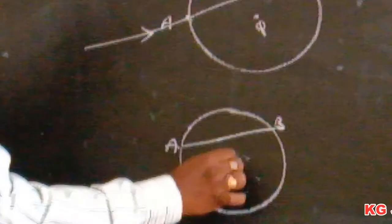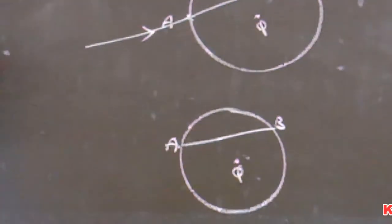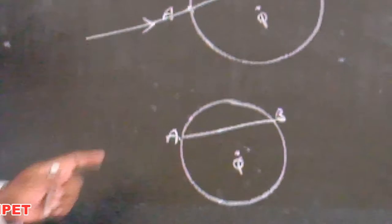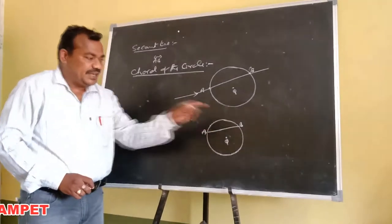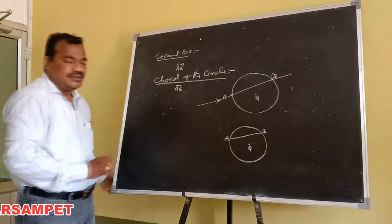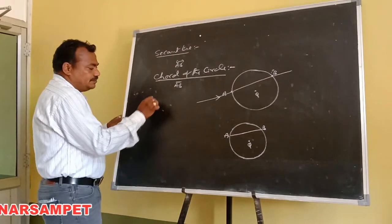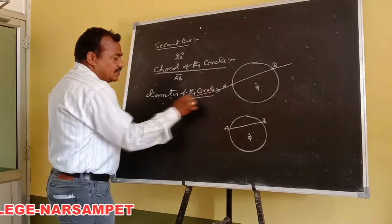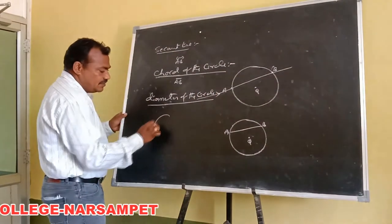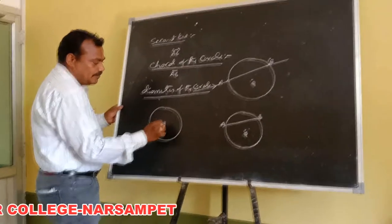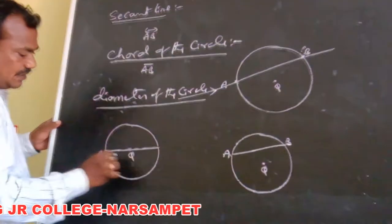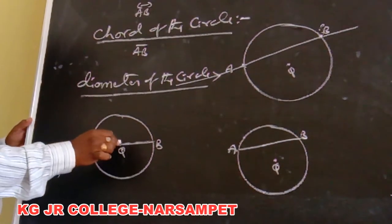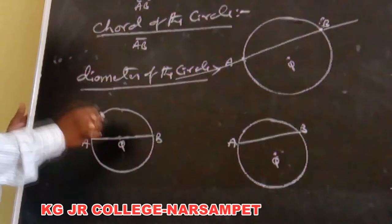The line segment joining the points A and B on the circle is called the chord. And the diameter of the circle — diameter of the circle means if a chord is passing through the center of the circle, then that chord is called the diameter of the circle.